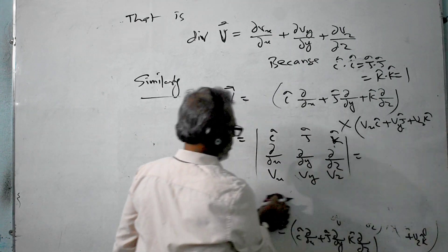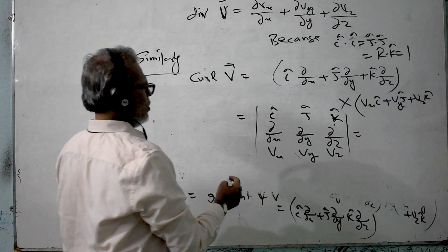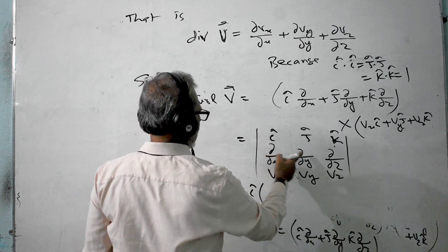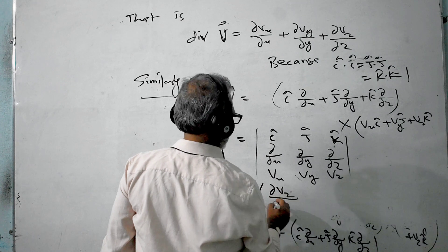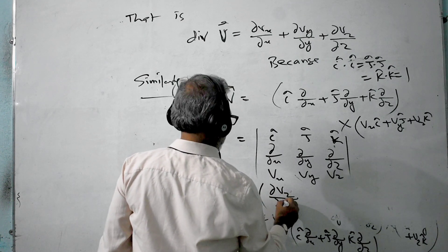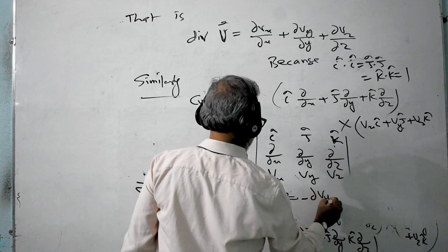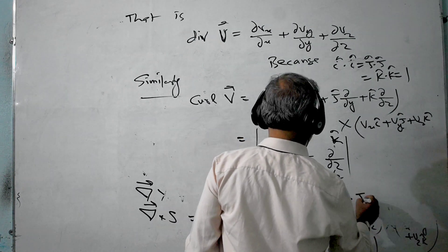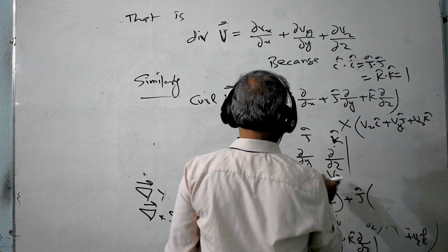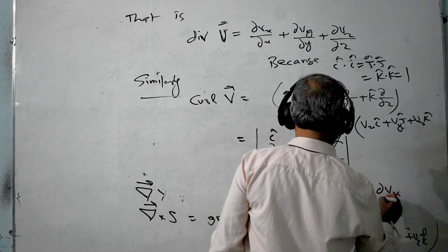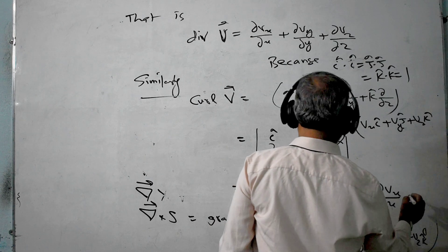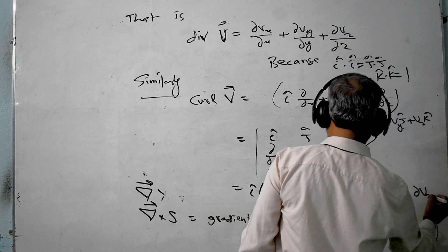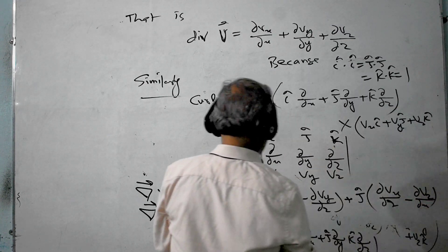This equals: i·(∂Vz/∂y − ∂Vy/∂z) + j·(∂Vx/∂z − ∂Vz/∂x) plus the k component. That is the expansion of curl V.